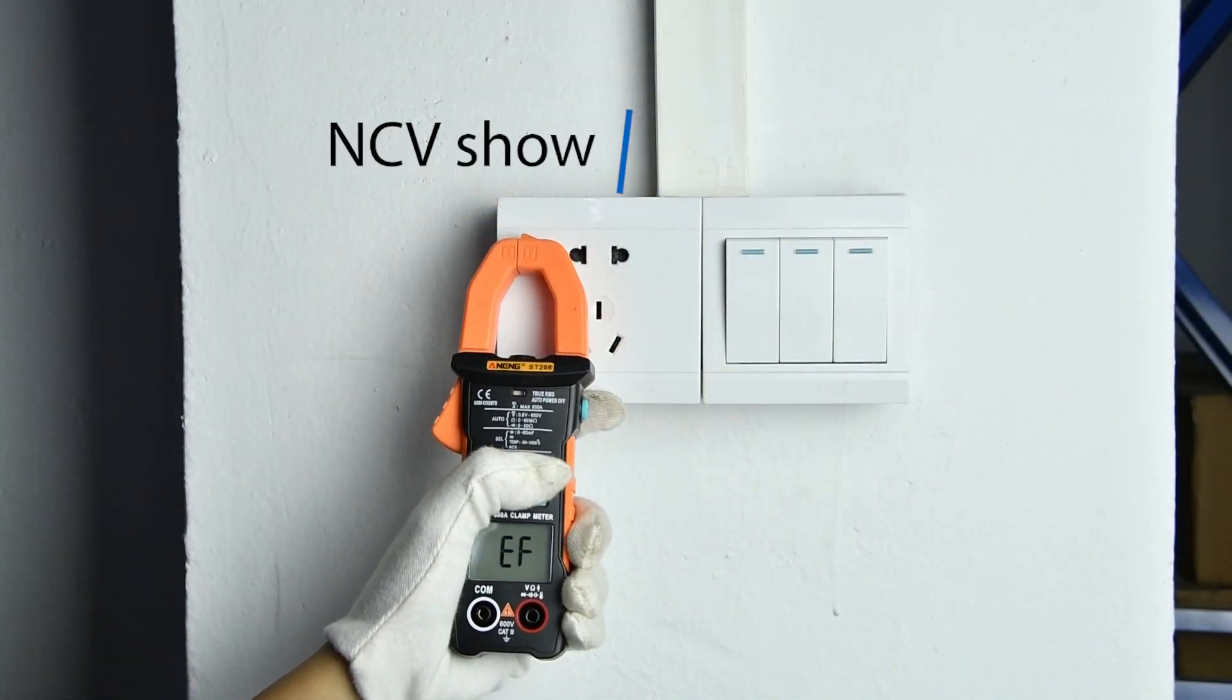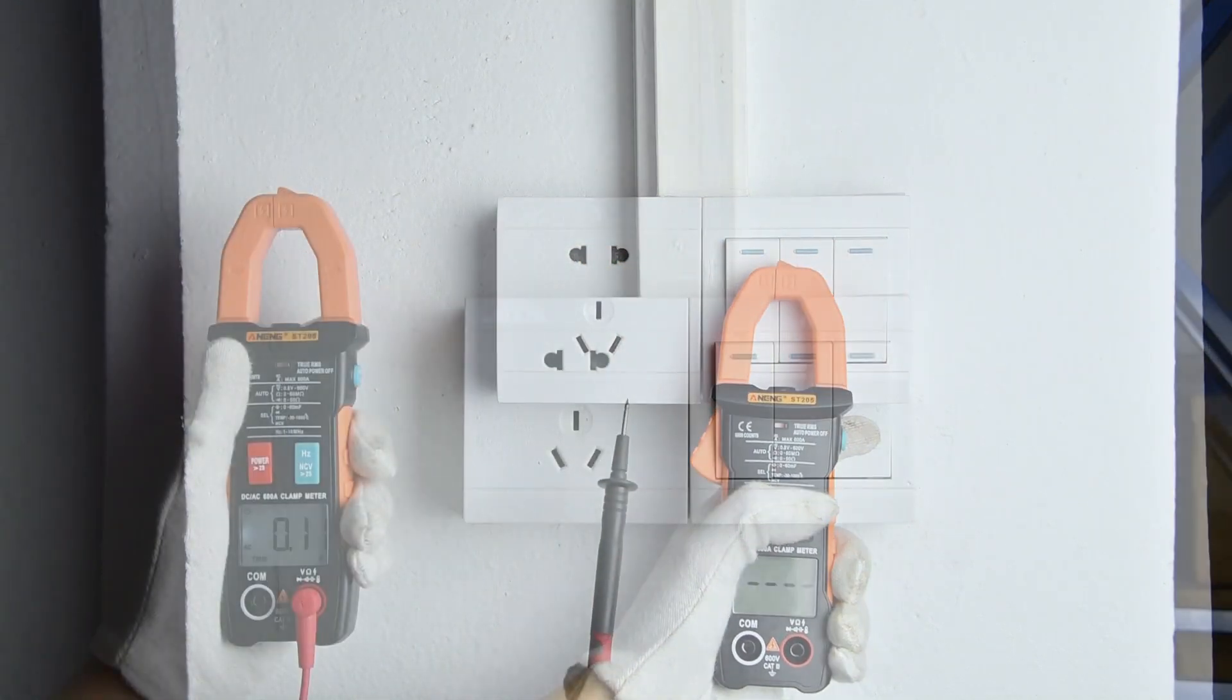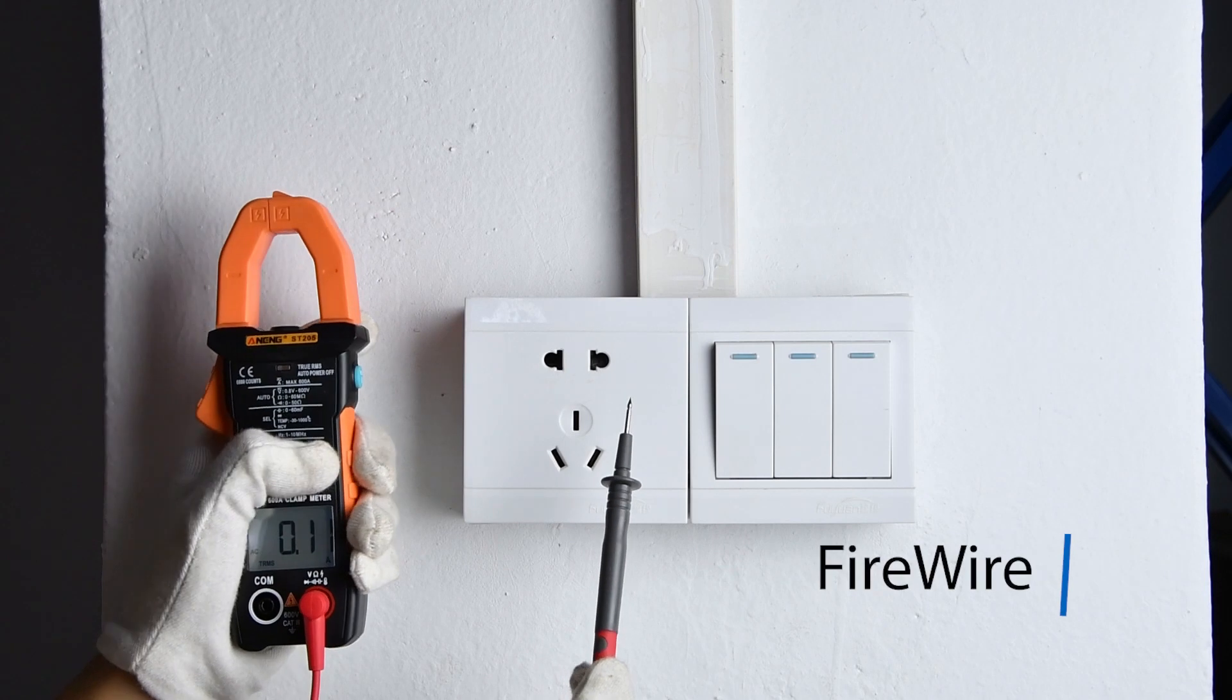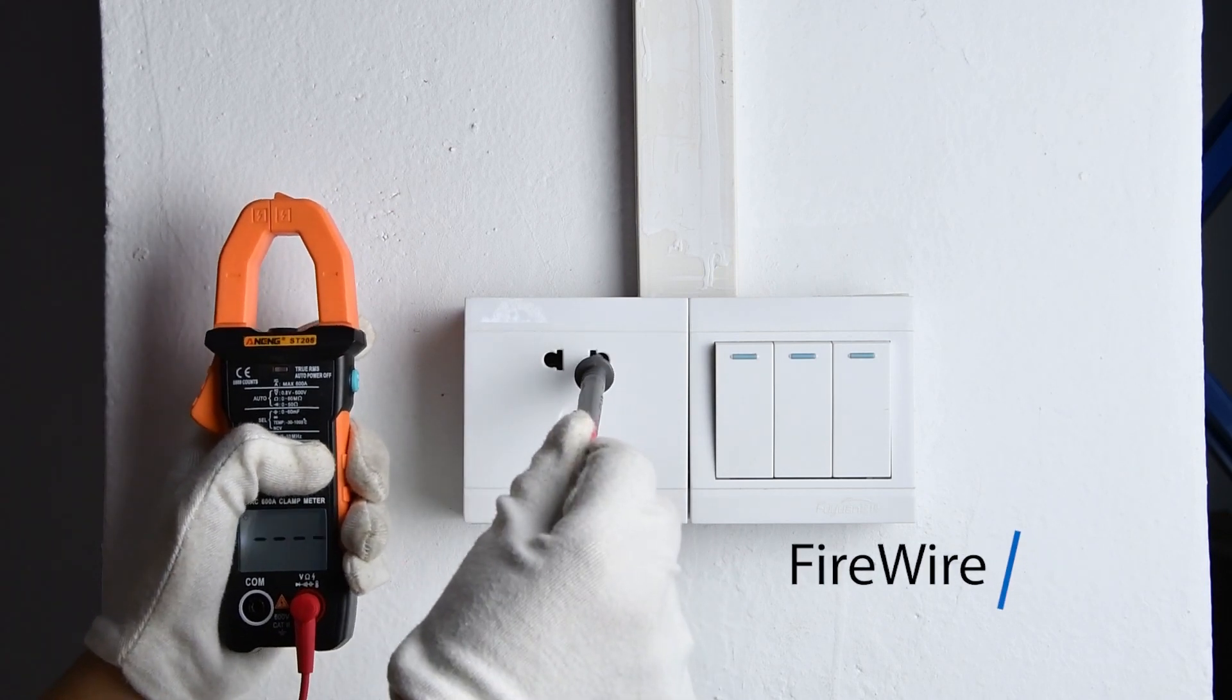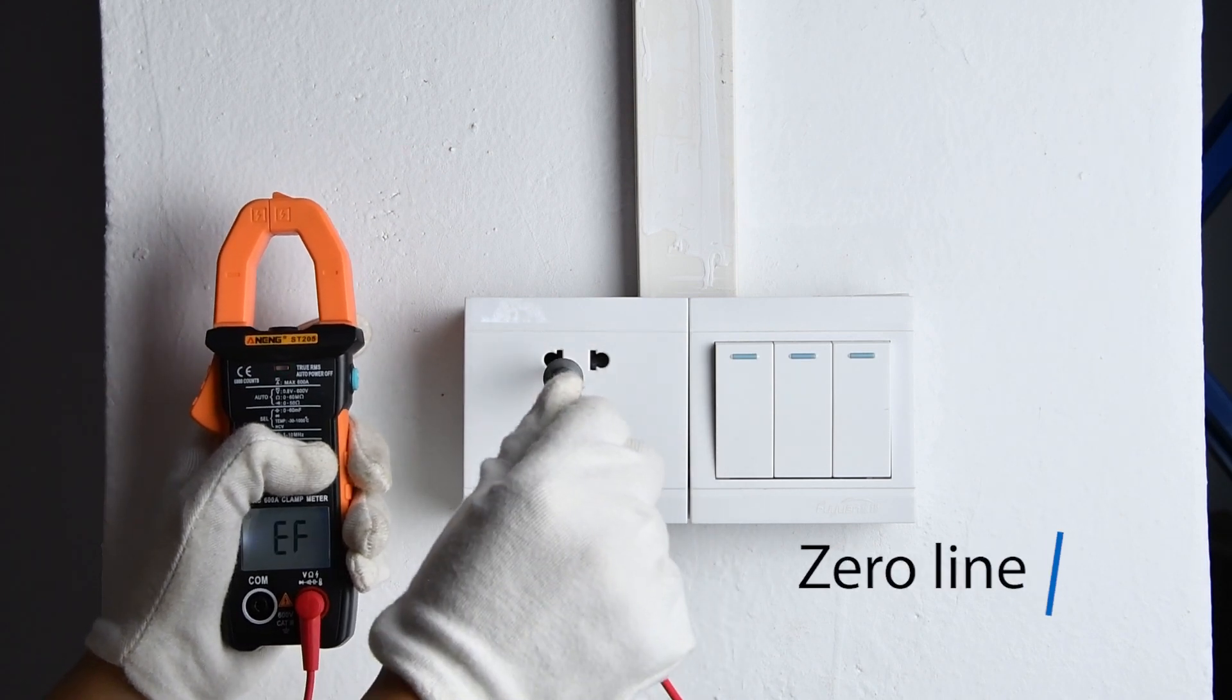NCV non-contact induction voltage, can be set to mute. Zero firewire identification: connect the red pen, use the test pen to take a single measurement.